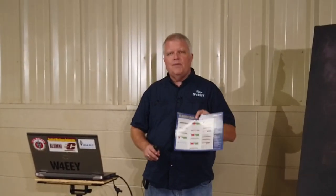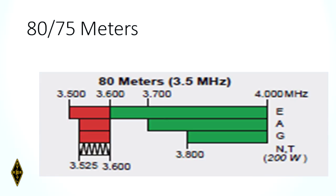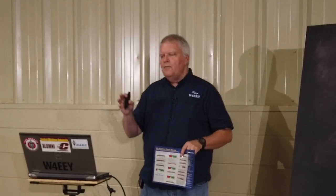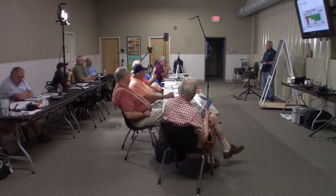Here's 80 meters. If you look off on the side, you'll see the EAG and the NT — we know what that means now. NTs are restricted to 200 watts. But when you get your general class license, what's the maximum power level you can run on 80 meters? 1,500 watts — well, the answer given is 10,000 watts PEP.